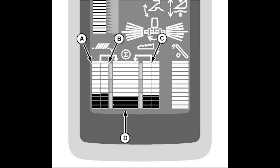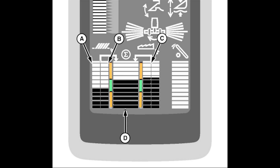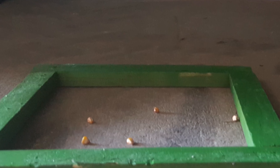Once the machine is set and operating at the chosen harvest rate, calibrating the grain loss system centers the middle display between the green bars. If the loss rate changes during harvest, the middle bar graph indicates these changes. Remember, the Grain Loss Monitor is a visual reference showing the change in loss level. The calibration sets the base level of acceptable loss.